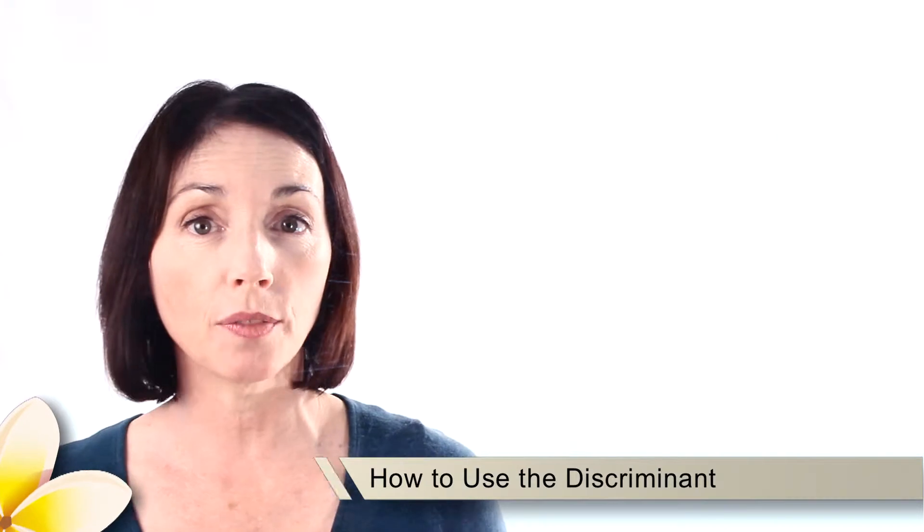Hey, it's Allison from Mahalo.com. Today we're going to talk about the discriminant. The discriminant is part of the quadratic formula. It's the part that appears under the square root symbol.